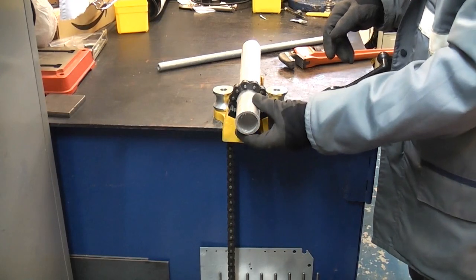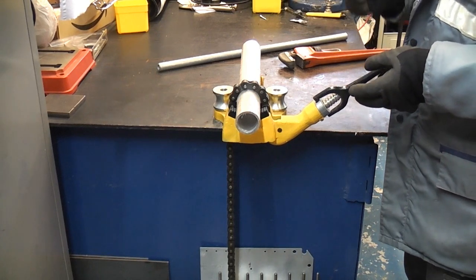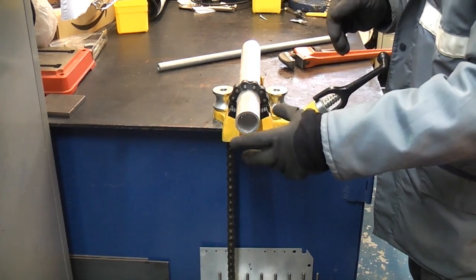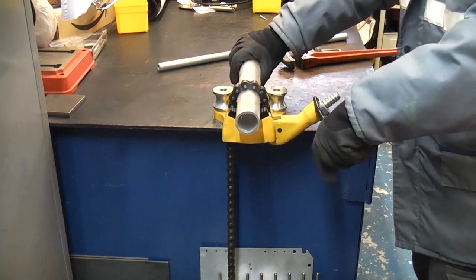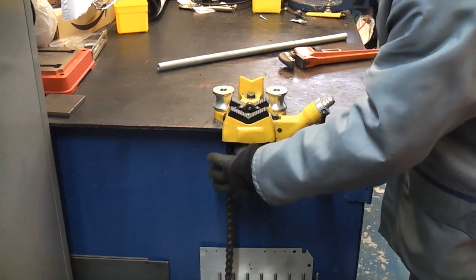Sometimes if you are threading really thin pipe and you try to hold it in a regular vise, there is a chance that you will distort it. When you thread it all together, it's going to leak. So these are absolutely ideal.